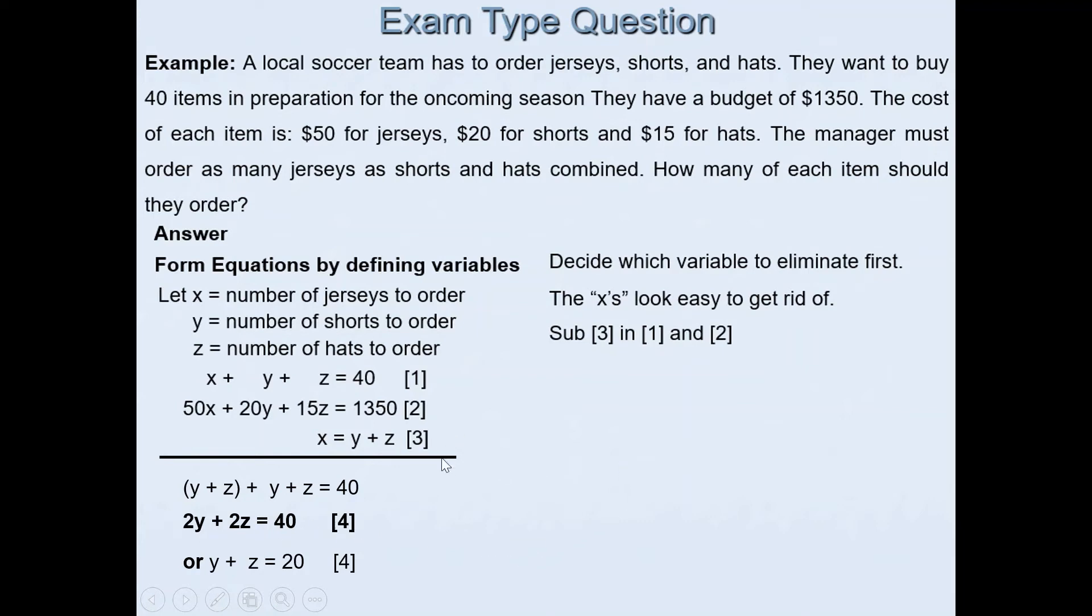Then we'll do the same thing. We'll replace x by y + z in the second equation. So that will read 50(y + z). Please make sure that when you substitute equation 3, put that in brackets because 50 is multiplied by both variables. Plus 20y + 15z = 1350.